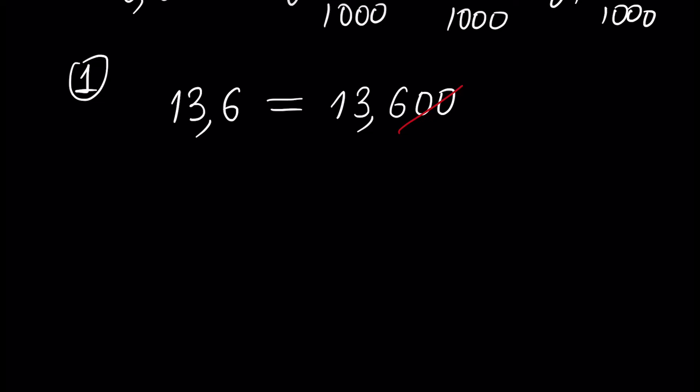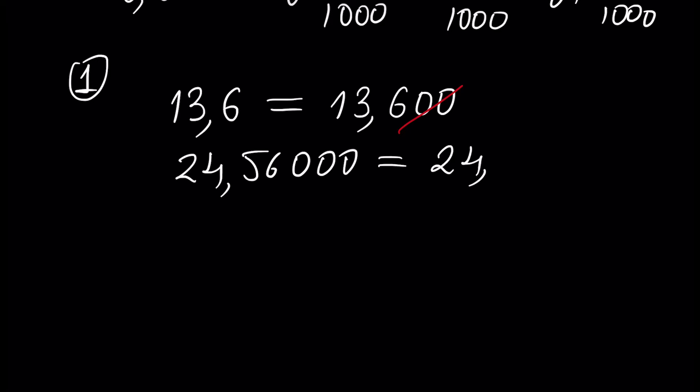For example, if we have 13.6, this is the same number as 13.600. We can ignore zeros after the last non-zero digit after the floating point. For example, 24.5600 is equal to 24.56. So we can add any number of zeros at the tail of our number and we can cancel them out — the number will be the same. We can drop zeros at the end of a decimal fraction and it doesn't change its value.